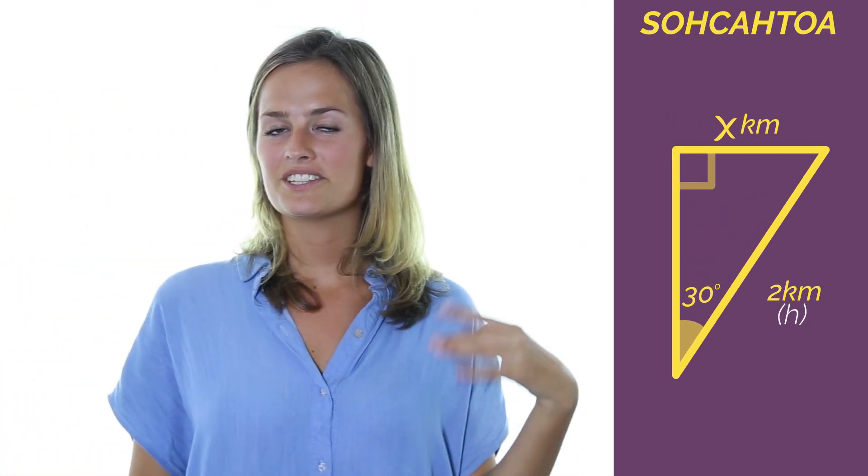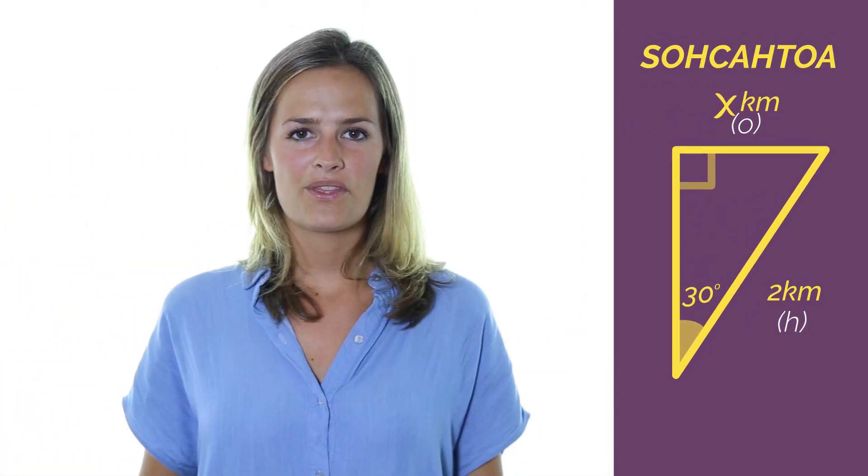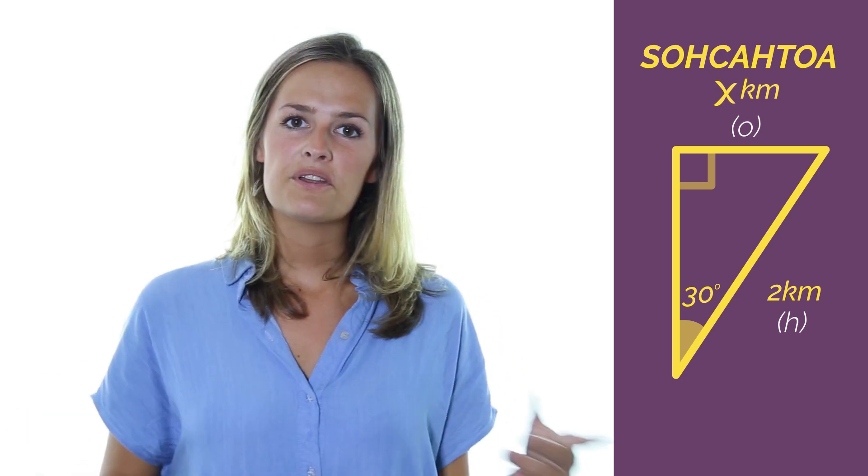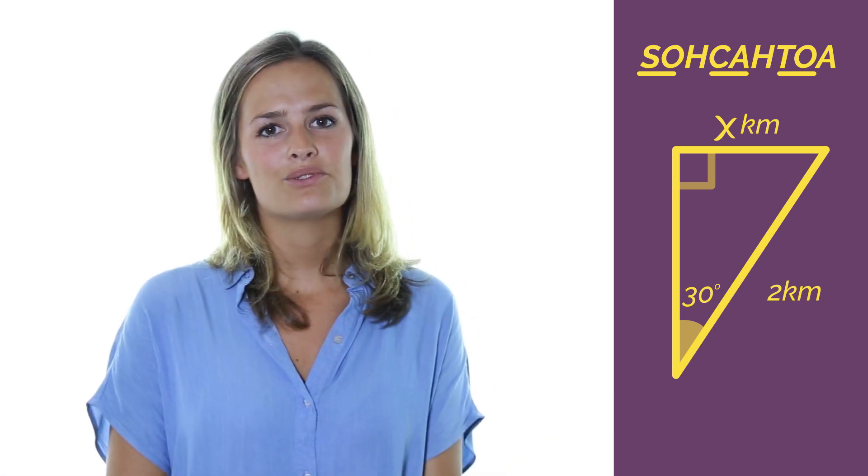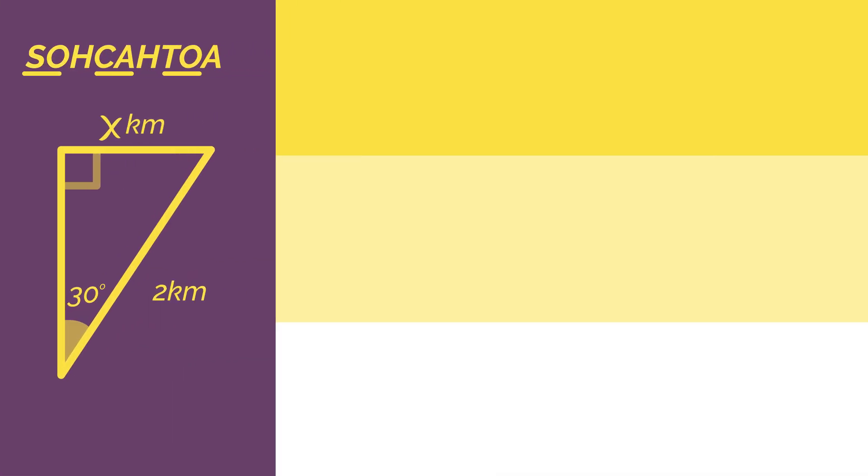So we have the hypotenuse H and we want the opposite O. With O and H, should we use sine, cos, or tan? Hopefully you all thought sine. We know that sine of the angle is the opposite divided by the hypotenuse. So just substituting the numbers and we get sine 30 equals x divided by 2.